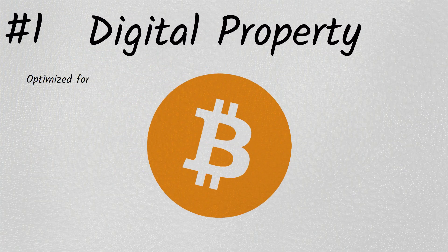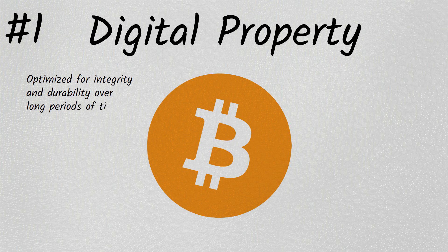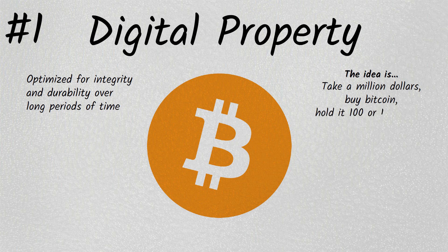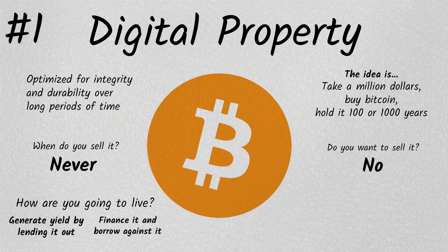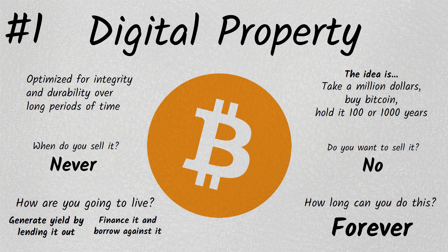The first quadrant is digital property. Bitcoin is the king of digital property. It's optimized for integrity and durability over long periods of time. The idea is: I want to take a million dollars, buy Bitcoin, and hold it for 100 years, maybe 1,000 years. Imagine owning a city block in London that your family has owned for 300 years. Would you ever sell it? Never. How do you live? You generate yield through rent, by lending it out to someone to build on, or you borrow against it — and you can do that forever if you're a smart landlord. That's digital property.